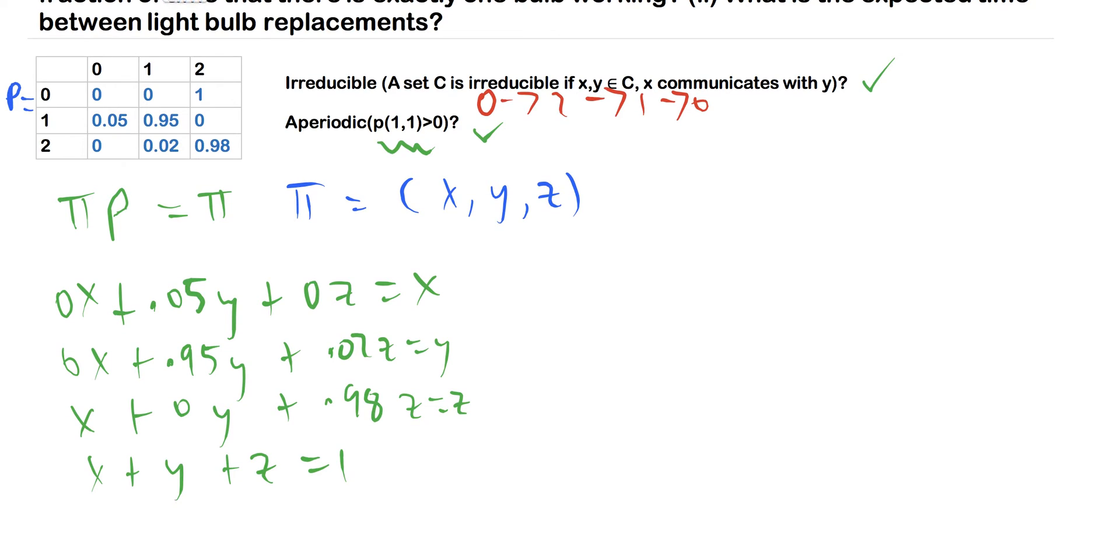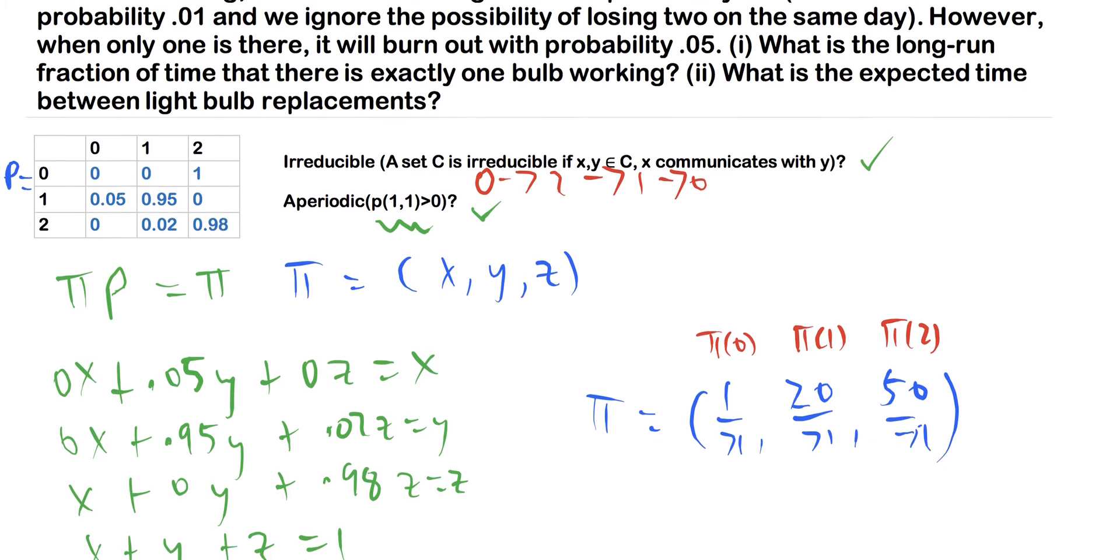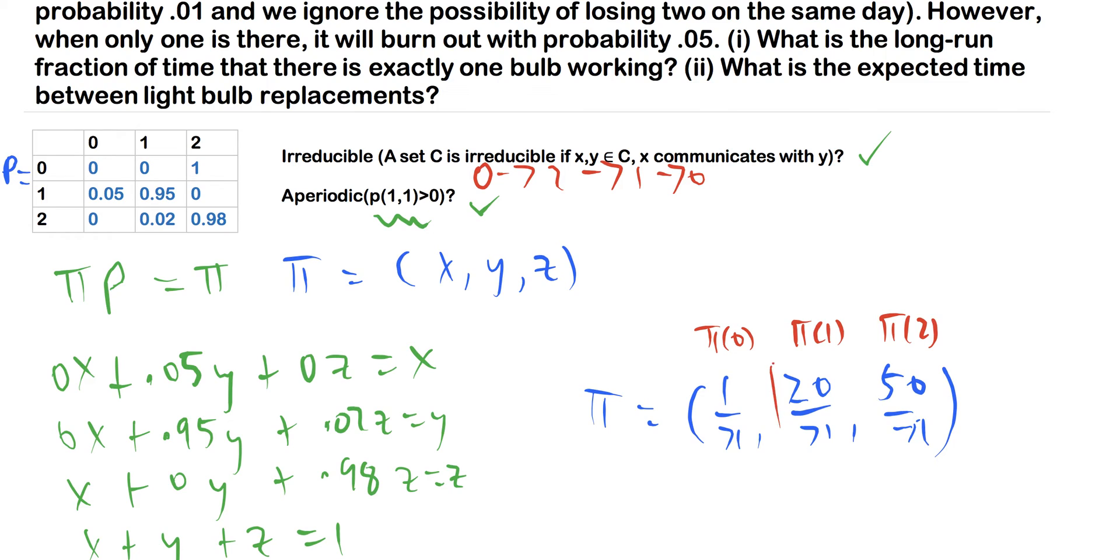Now what this comes out to be, I'll write it here in blue. Like I said, I'm not going to solve this system of equations because it takes a little bit too long, but we have 1 over 71, 20 over 71, and then 50 over 71. So I'll write this in red: this is π(0), this is π(1), this is π(2). So when the question asks what is the long-run fraction of time that there is exactly one working lightbulb, what we want here is our π(1), which is 20 over 71.